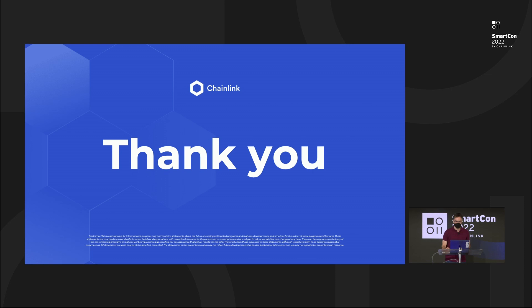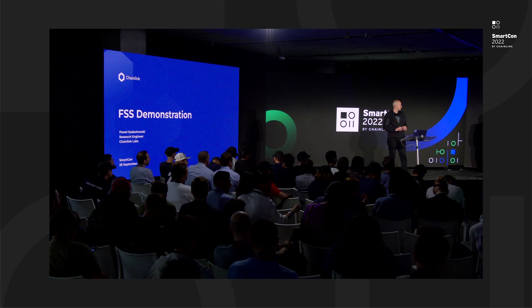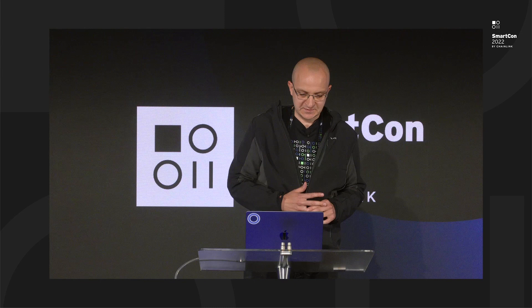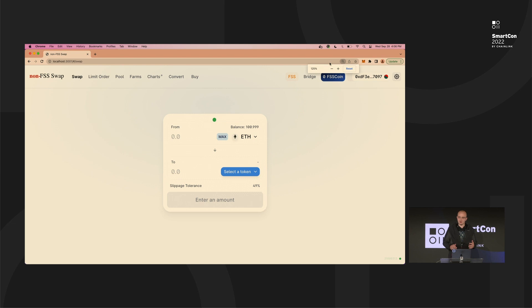Thank you. Okay, thank you very much, Ari, for the introduction. I'm Pavel, I'm with the research team at Chainlink Labs. Today I will demonstrate the FSS prototype we have. I will start with an Automated Market Maker service — this is a service you may know, like Uniswap, or a version of it. So here we have a non-FSS swap, which is basically a Uniswap fork.